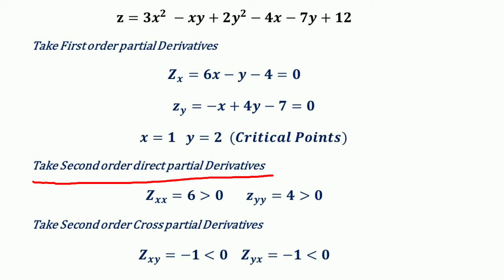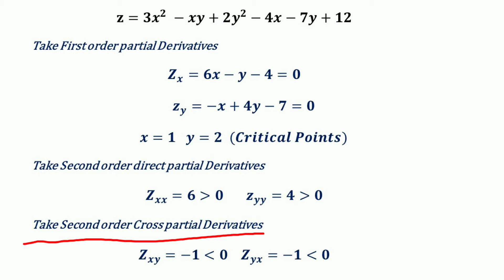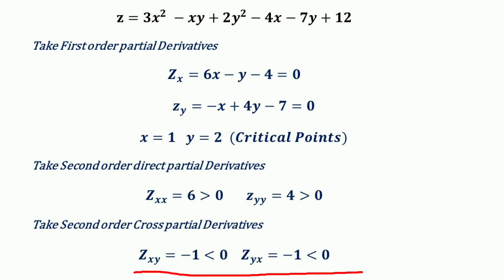Now for the second order condition, we take the second order direct partial derivatives. z_xx = 6, which is greater than 0, and z_yy = 4, which is also greater than 0. The cross partial derivatives are z_xy = −1 and z_yx = −1.